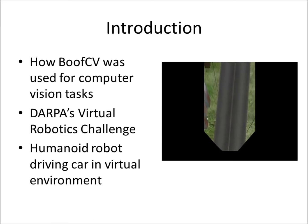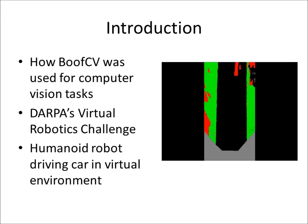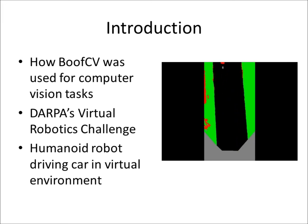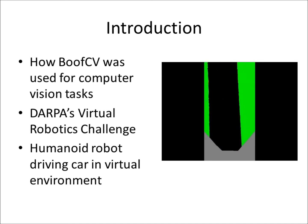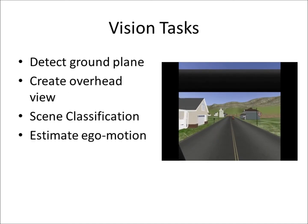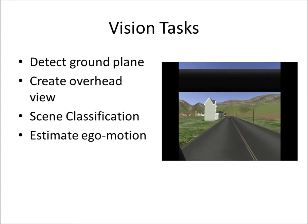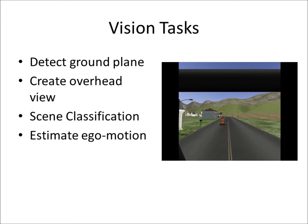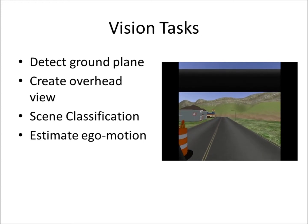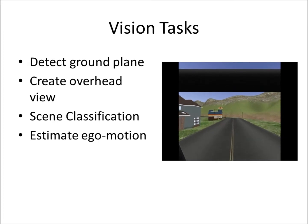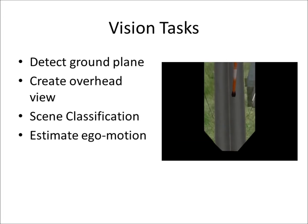The video to the right shows the fully autonomous algorithm driving down the road at full speed while switching between a left camera view, synthetic overhead view, and a classified view. The vision subsystem used BOOF-CV to provide the following capabilities: detect the ground plane, create an overhead view, classify the overhead view, and estimate the vehicle's ego motion.